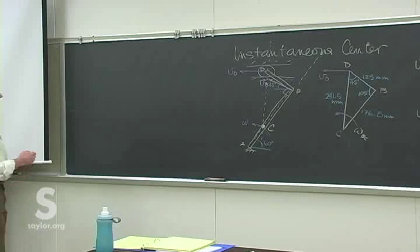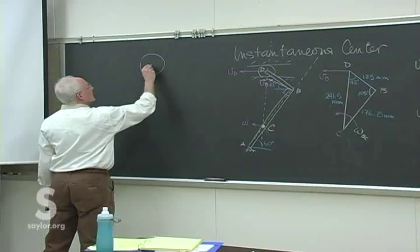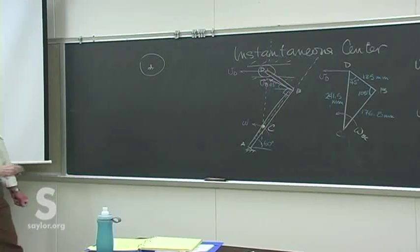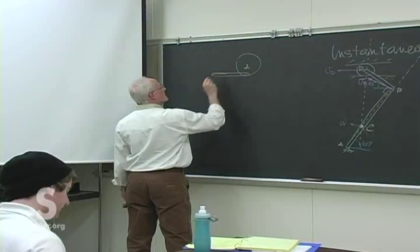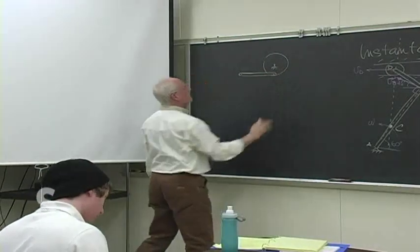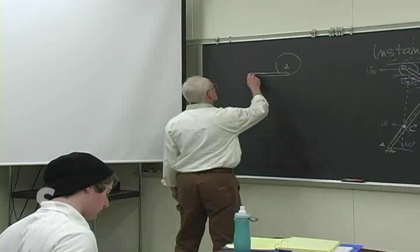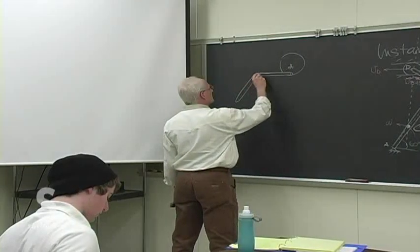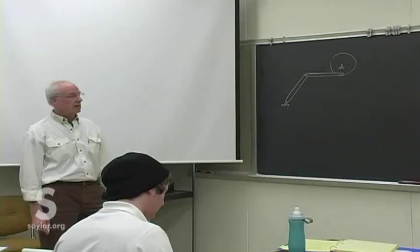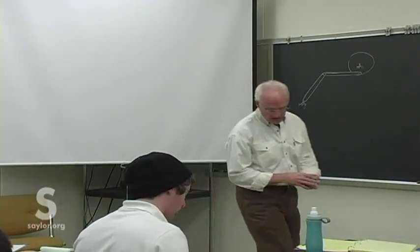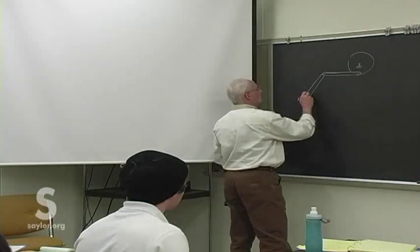Let's try it with another problem we did on Friday. We had this one where we had a wheel whose center was fixed, and then the bottom of the wheel was attached to a link arm that was horizontal at the instant shown. The other link arm, which happened to be the same length, was also fixed on its end. Remember doing that problem Friday? We did it using the method of relative velocity. Take a look at the same problem using the method of instantaneous center.